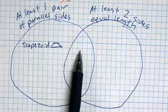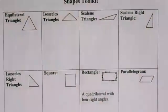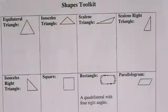Can somebody give you the name of the shape that would go in our center section? This should have at least one pair of parallel sides and at least two sides of equal length. So look over these pictures and find me a shape that's got some parallel sides and some equal length.